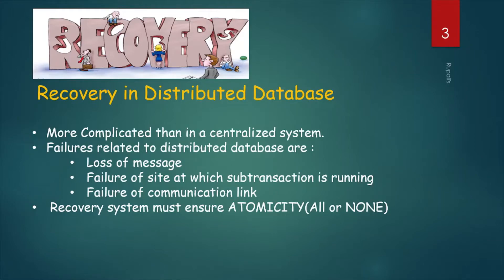Database systems, like any other computer systems, are subject to failures, but the data stored in it must be available as and when required. When a database fails, it must possess the facilities for recovery. It must also have atomicity — that is, either transactions are completed successfully and committed, with the effect recorded permanently in the database, or the transaction should have no effect on the database.